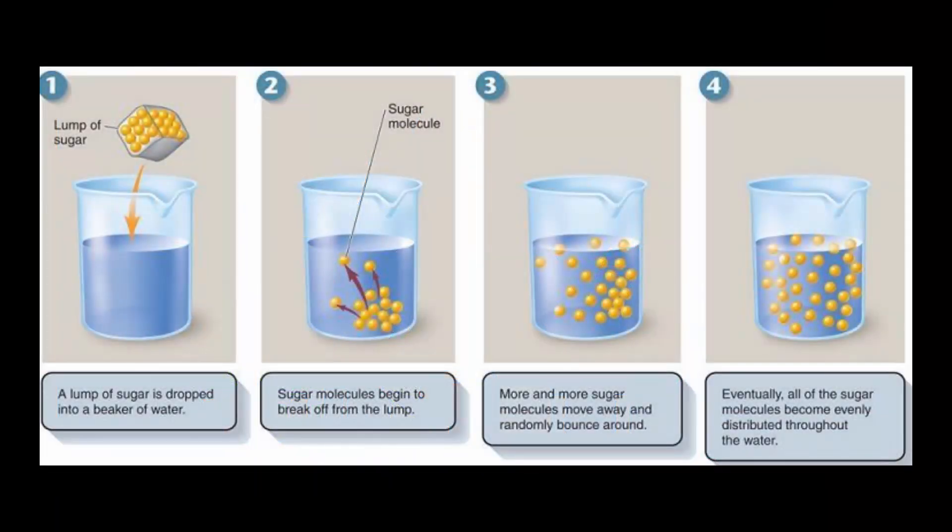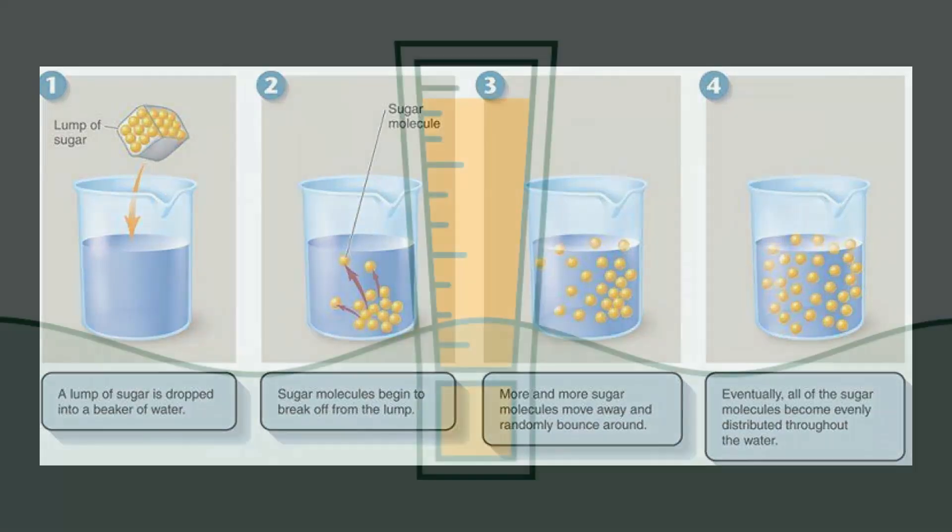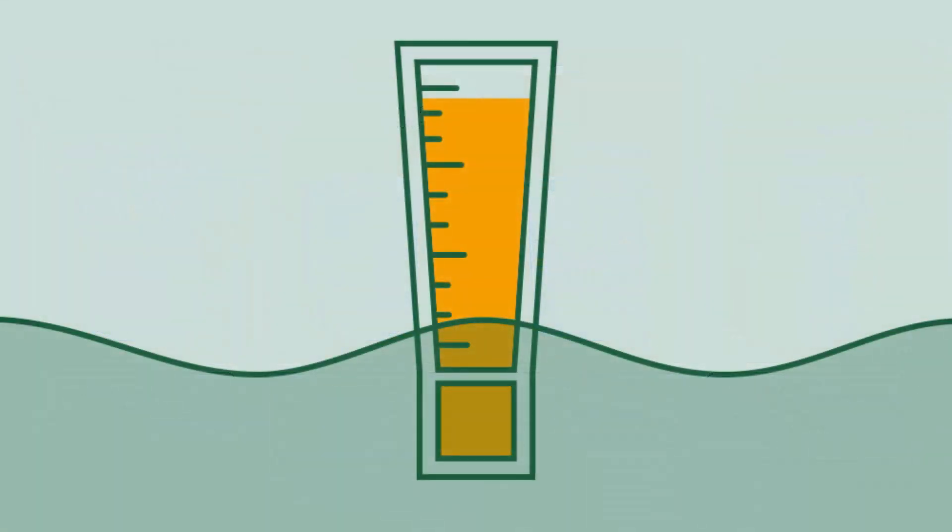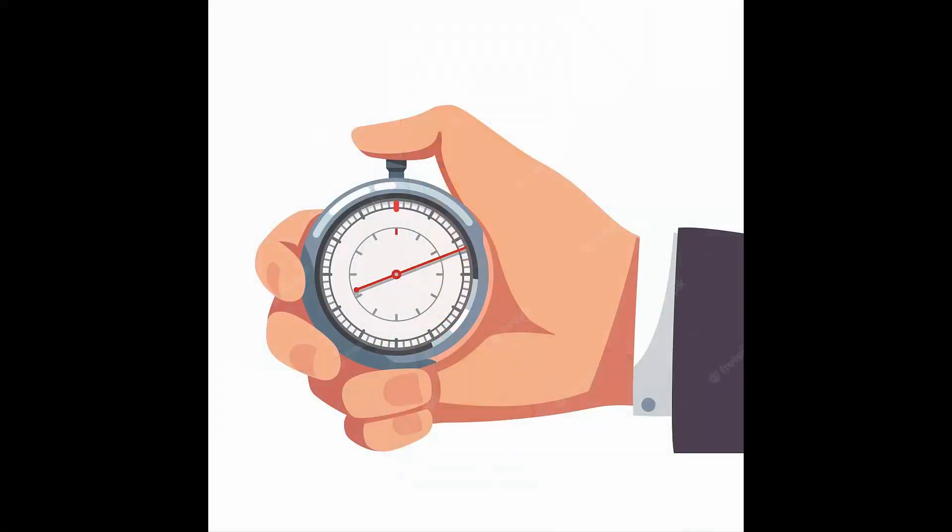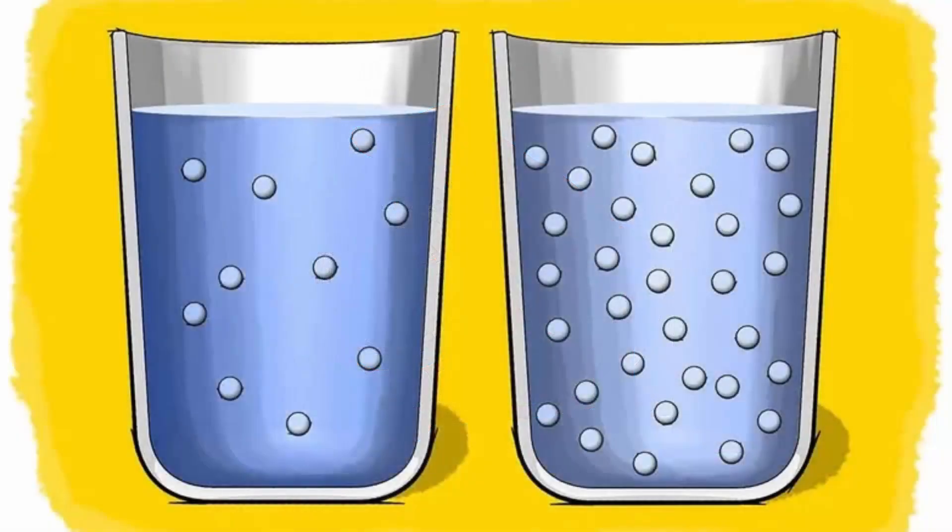For example, if we investigate the question in unit 2, does water temperature affect the rate of dissolving? Then, the water temperature is the independent variable that we change, the time it takes the solute to dissolve is the dependent variable that we measure, the amounts of water and solute and number of times we stir the solution are the control variables that we keep the same.